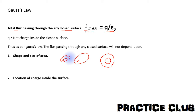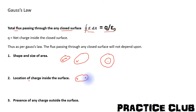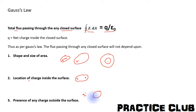The flux will also not depend upon the location of the charge inside the closed surface. Furthermore, the flux will not depend upon the presence of any charge outside the surface — external charges do not affect the total flux through the closed surface.